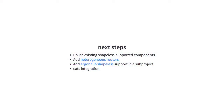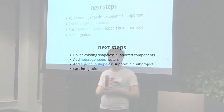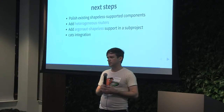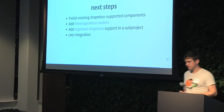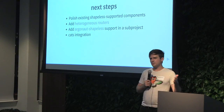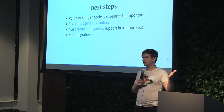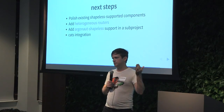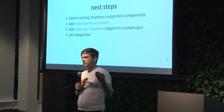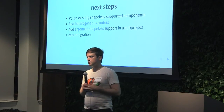Argonaut-Shapeless is another next step — Argonaut is the currently suggested default JSON library in Finch, and there's a nice Argonaut-Shapeless library that shows off even more of the power of Shapeless. We also need to continue thinking about whether it makes sense, given the development of Cats, to bring in Cats integration, continuing development in a separate cats branch kept as closely in sync with Finch master as possible over the next few months.